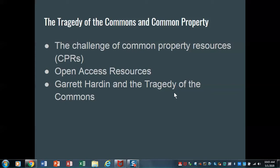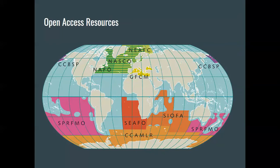What Garrett Hardin did in the 1960s is he began to examine the problem of declining quality in these commons. He looked at both open access resources and common property resources, and noted that over time these resources tended to degrade faster than those held in private property. He asked why, and came up with a pretty reasonable solution. An example of an open access resource is, in fact, the high seas.